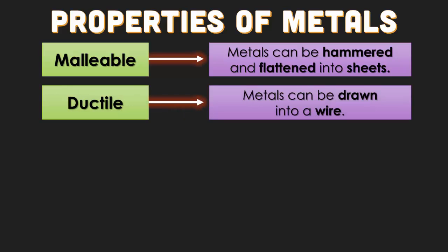Metals are also ductile, which means that metals can be stretched or drawn into a wire. Think of your iPhone or your Samsung cables — they're full of wires because metals are ductile.